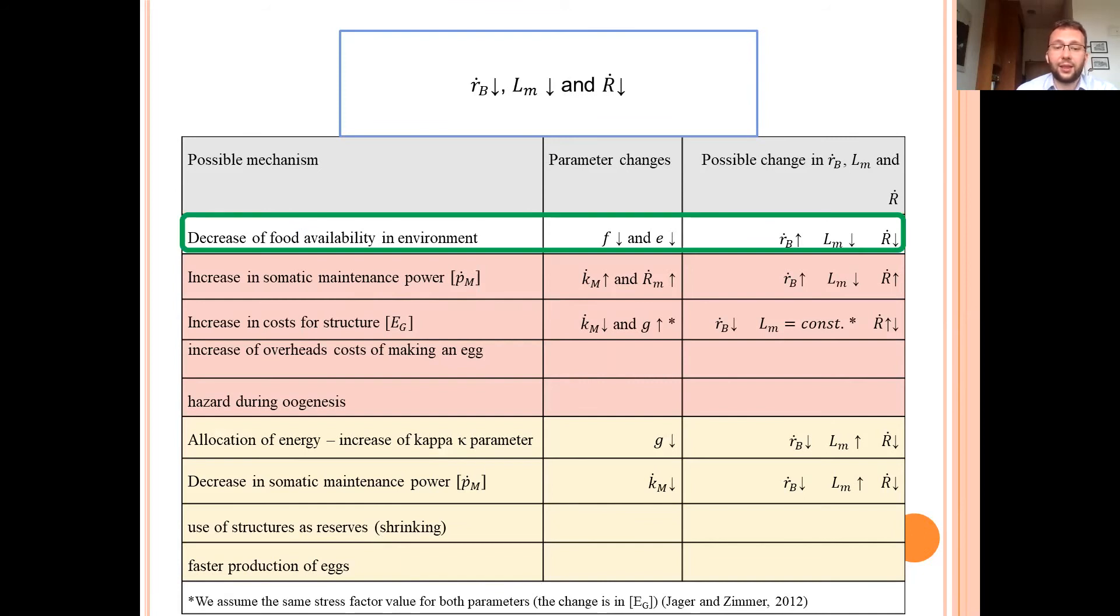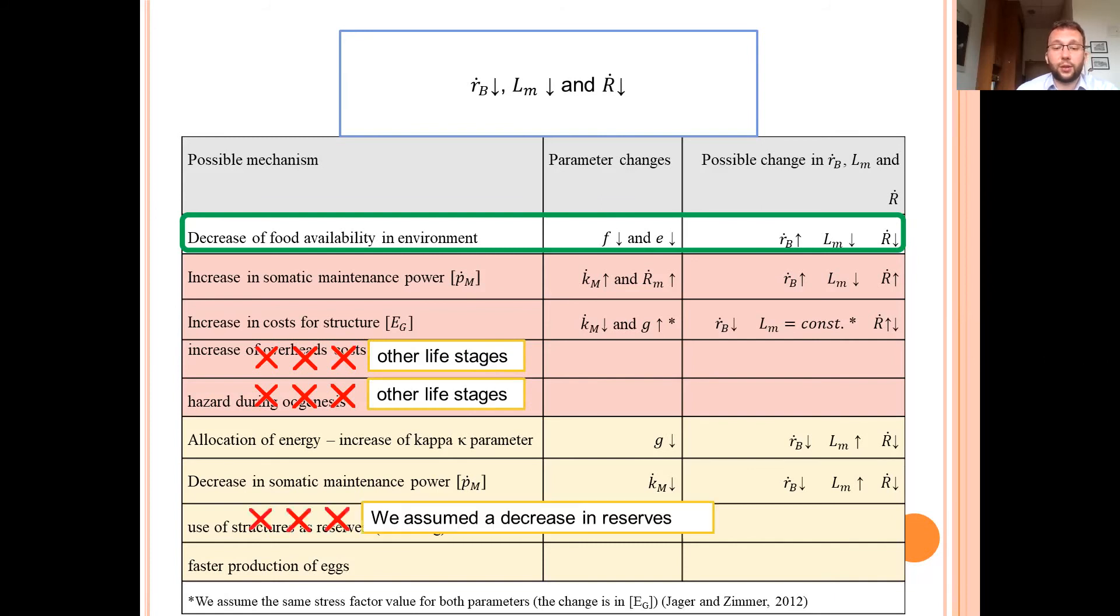So we are pretty sure that f value decreased because we made it decrease. However, it does not explain the decrease in Rb value. So probably something else is also going on over there. And we can eliminate mechanisms which concern egg production because we do not deal with them during the larval stage. We can eliminate the decrease of structures shrinking, as we assume the decrease in volume is caused by the decrease of reserves.